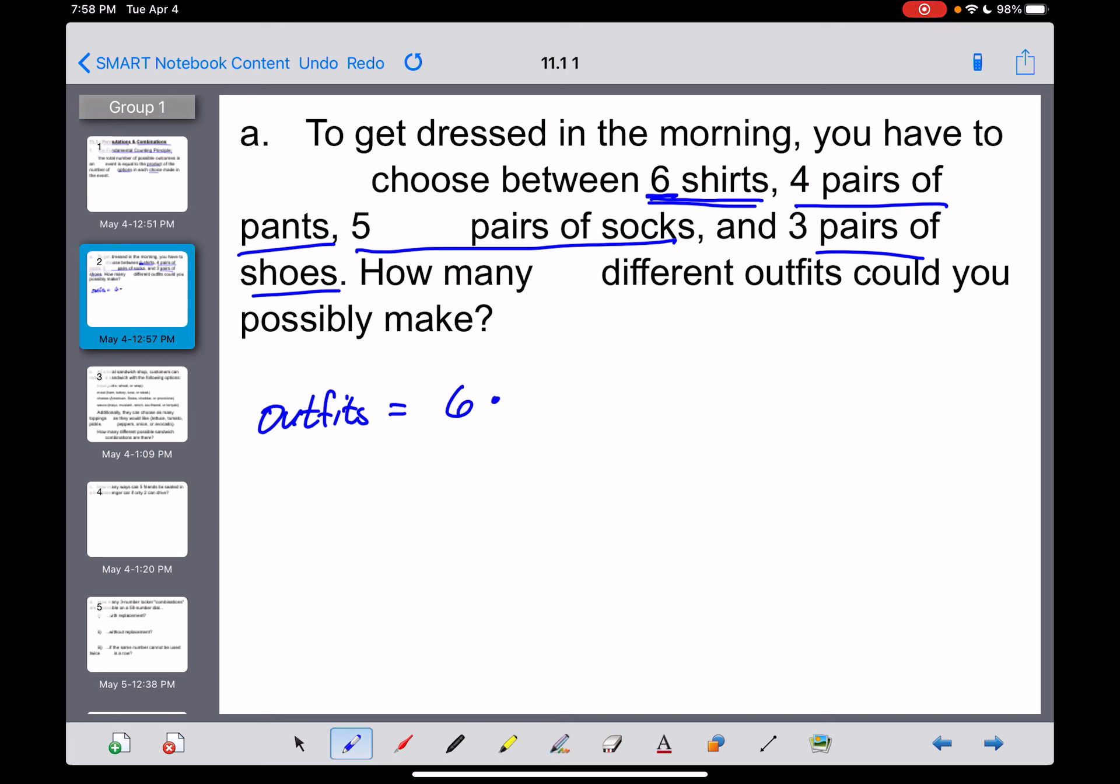In order for us to be able to figure out probability, which is a goal later in this chapter, we first have to know how many total different things could conceivably happen. So if we want to figure out the total number of outfits that are possible here, you're going to multiply all of the number of options you have for each choice. I've got six options for shirts, so I start with a six. Then we're going to multiply that by the four possible pairs of pants, five different pairs of socks, and three pairs of shoes. That's going to make 360, which means you could make 360 unique outfits.